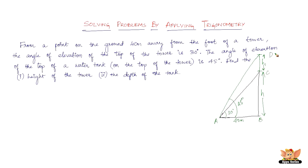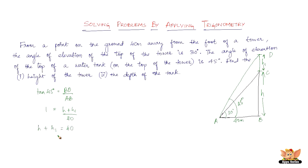Now we need to find the opposite side — we've got an angle and an adjacent side, so there's no doubt that we need to use tan. Let's start with tan 45 degrees: tan 45 = opposite/adjacent = BD/AB. Tan 45 is 1, BD is H plus H1, and AB is 40. So we form equation one: H + H1 = 40.